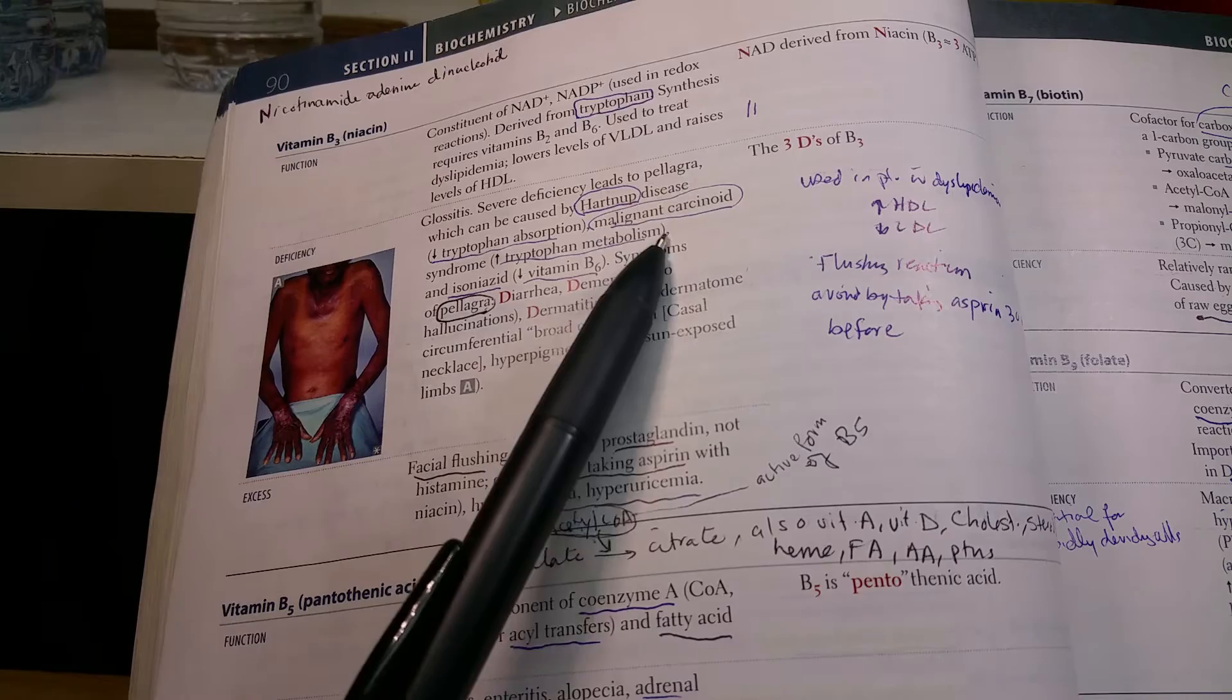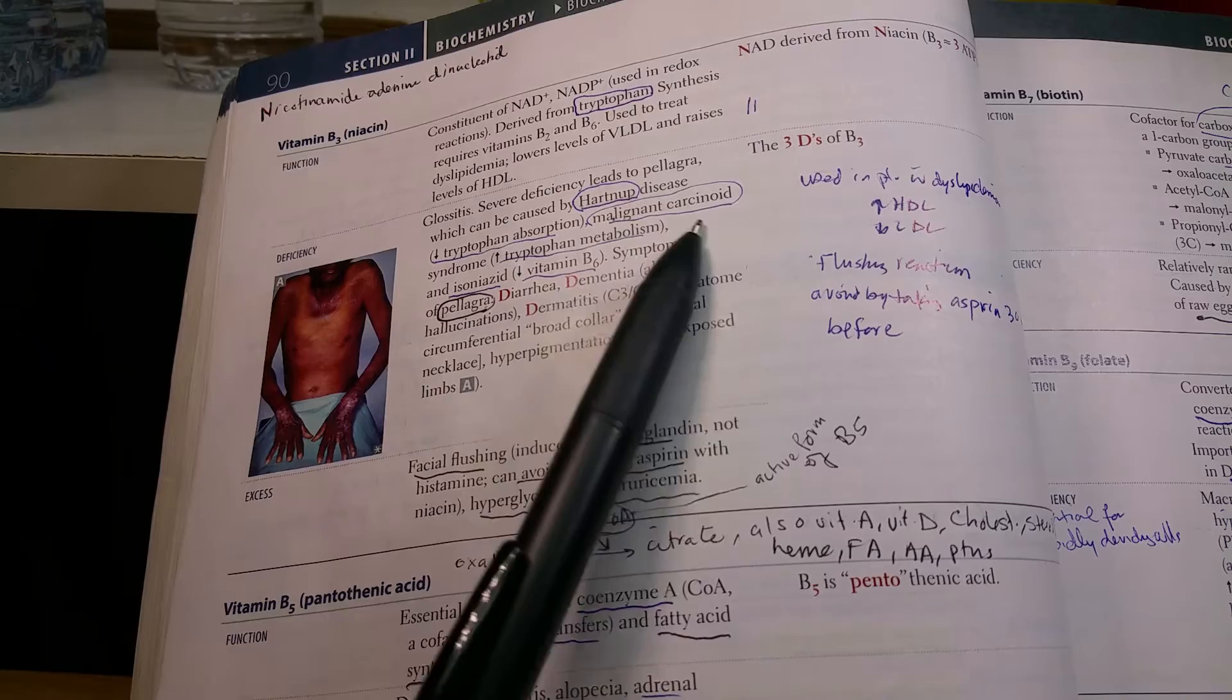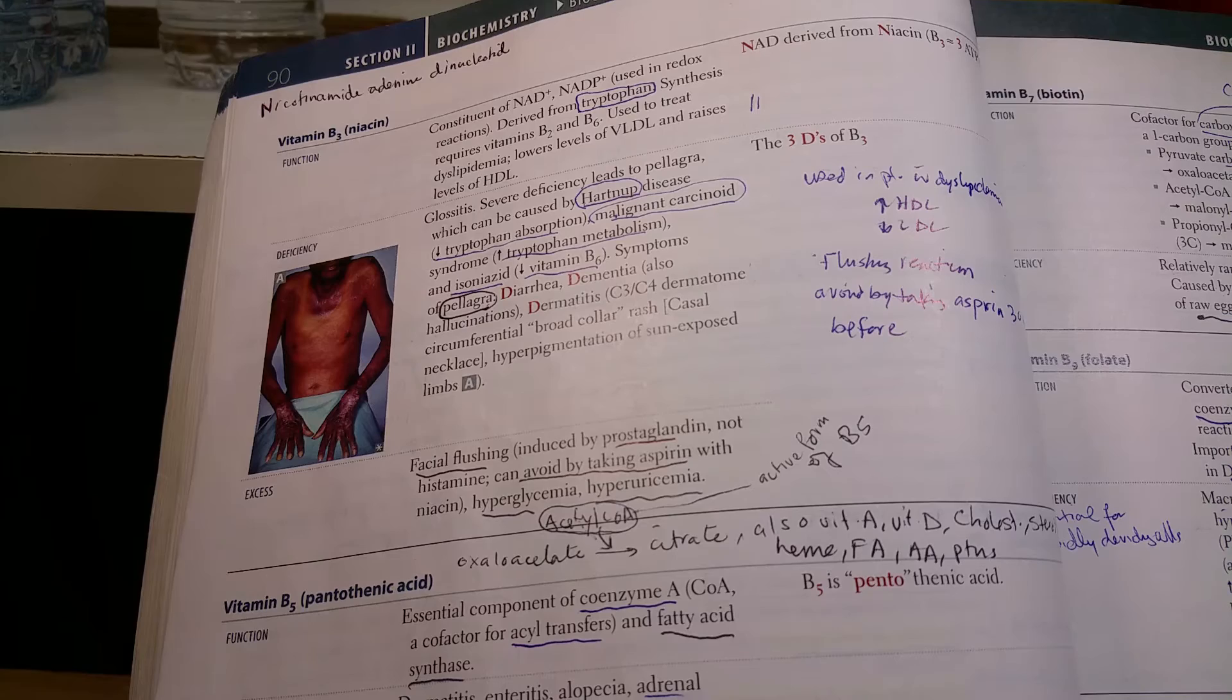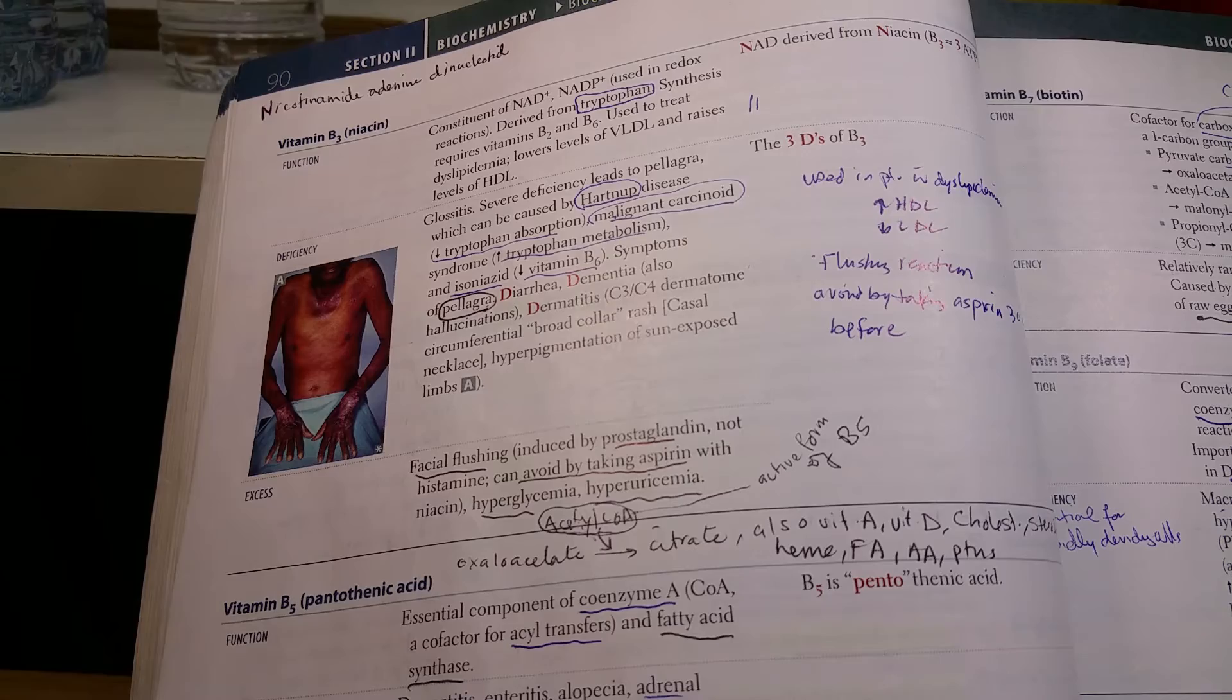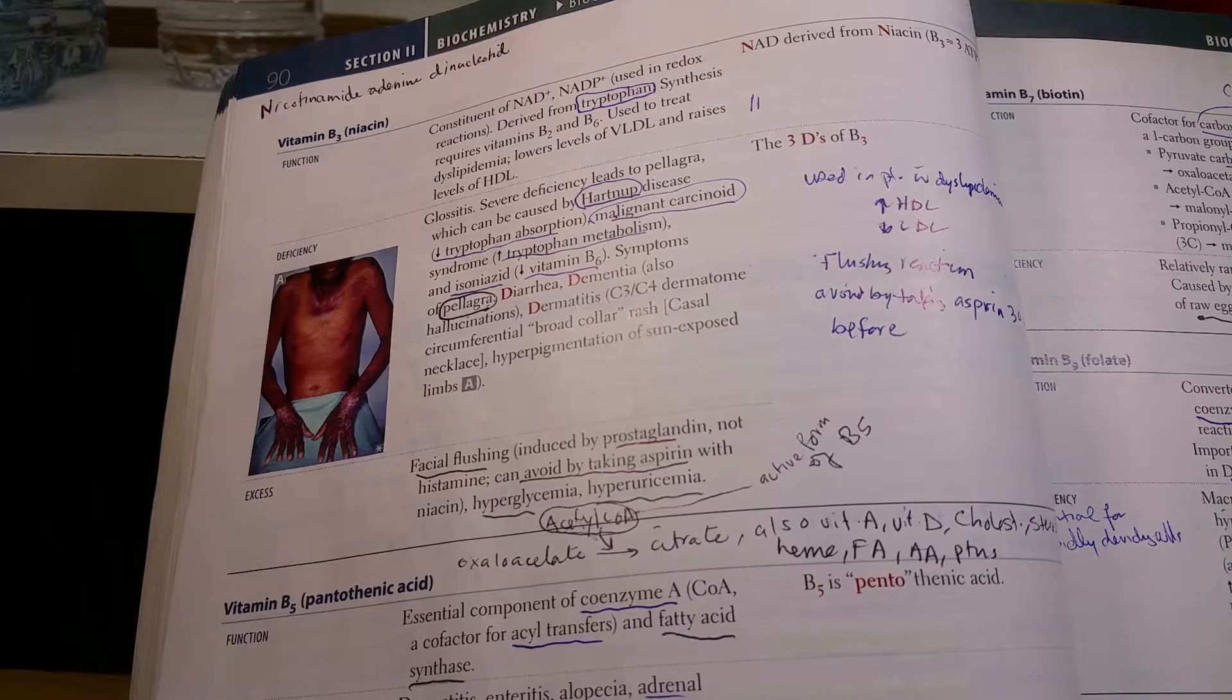Hartnup disease affects tryptophan metabolism, so it may cause niacin deficiency. Carcinoid syndrome increases tryptophan metabolism, so it may cause the deficiency. INH affects both vitamin B3 and vitamin B6.